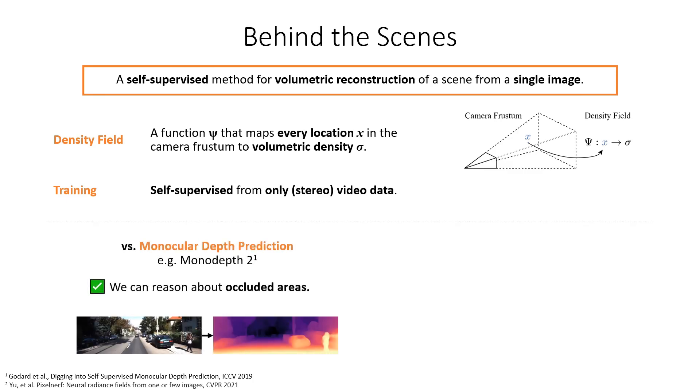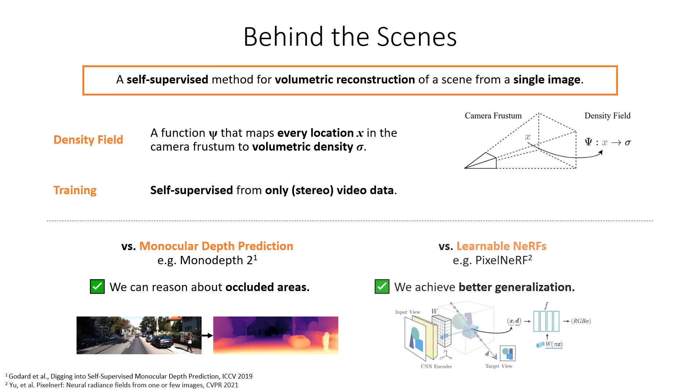Unlike methods for depth map prediction, for example MonoDepth2, our method can reason about areas that are occluded in the input image. Compared to learning-based neural radiance fields, for example PixelNeRF, our representation is much easier to predict, improving generalization capabilities.